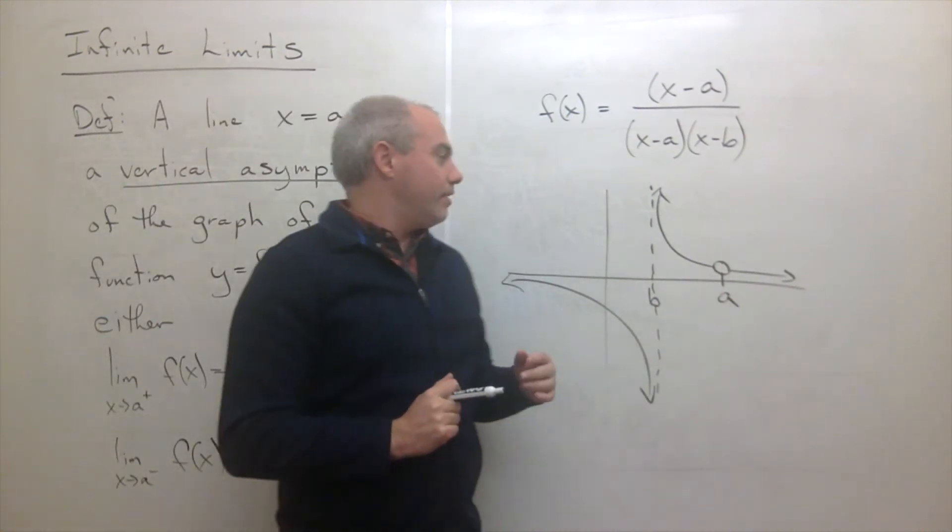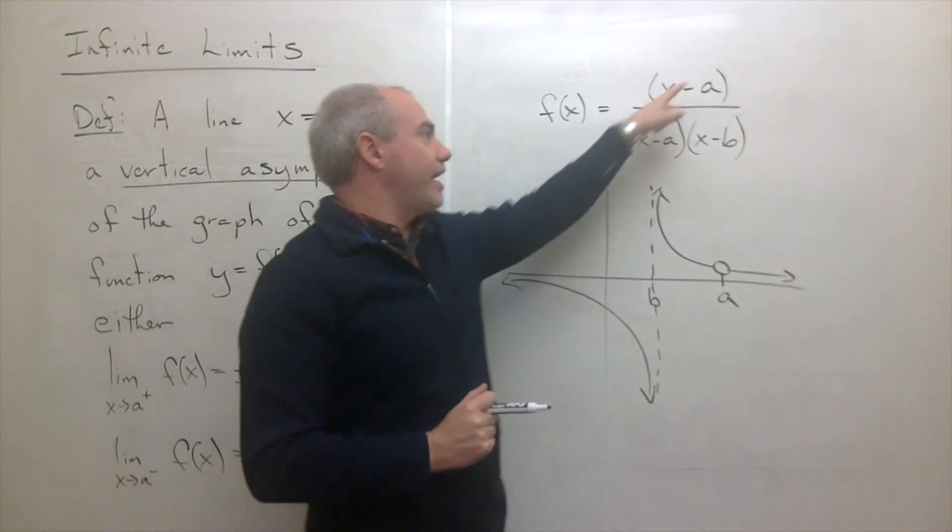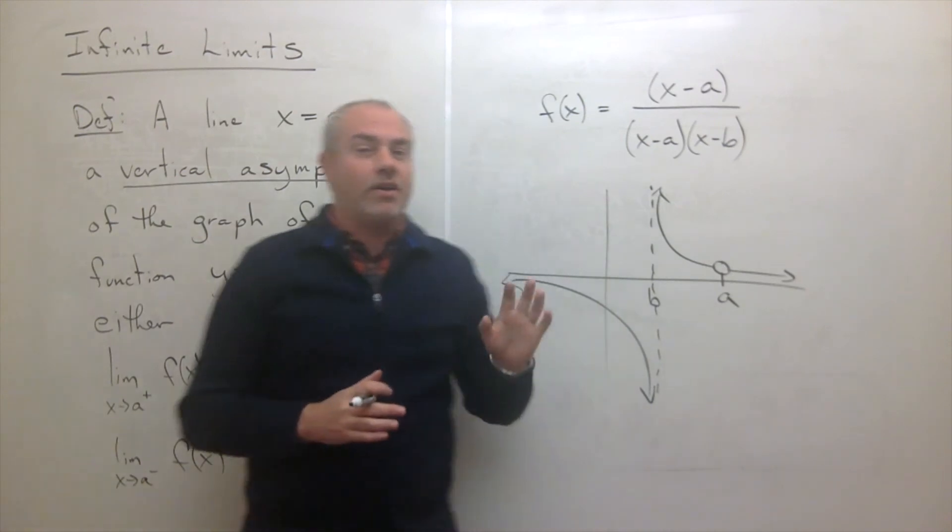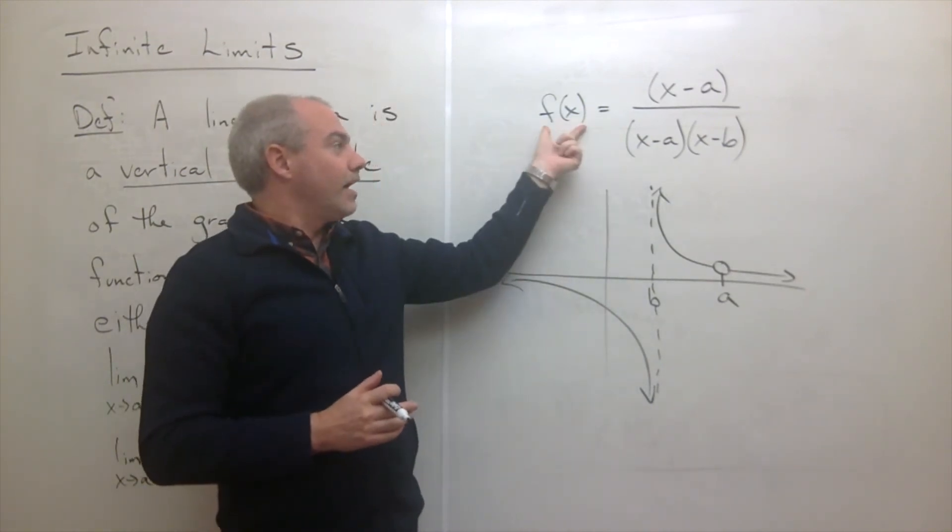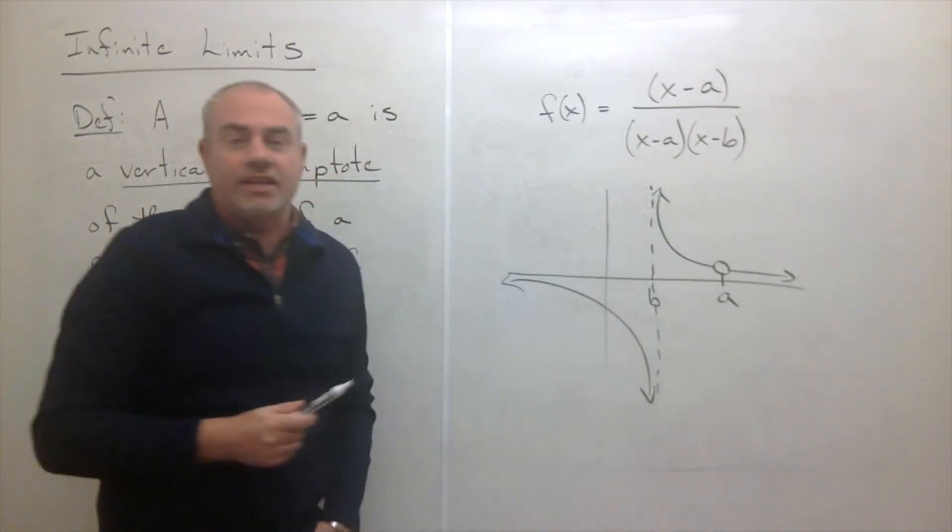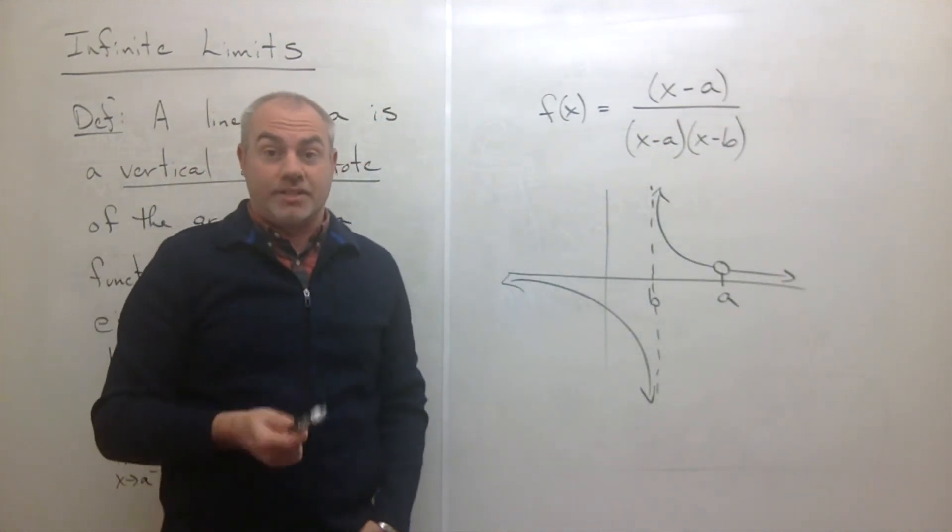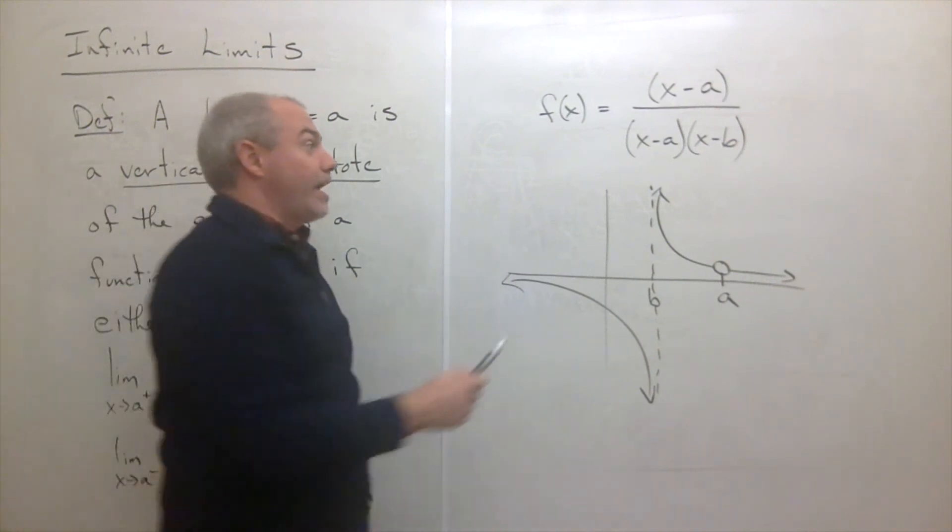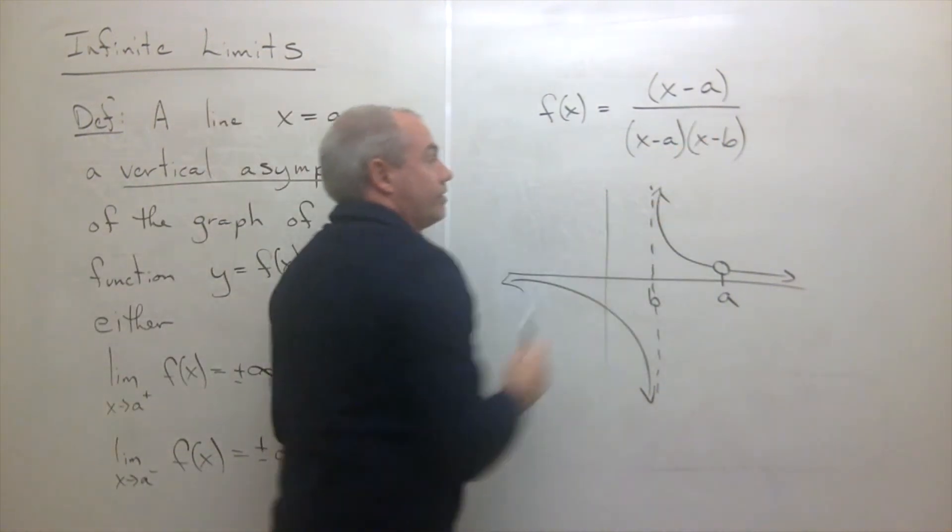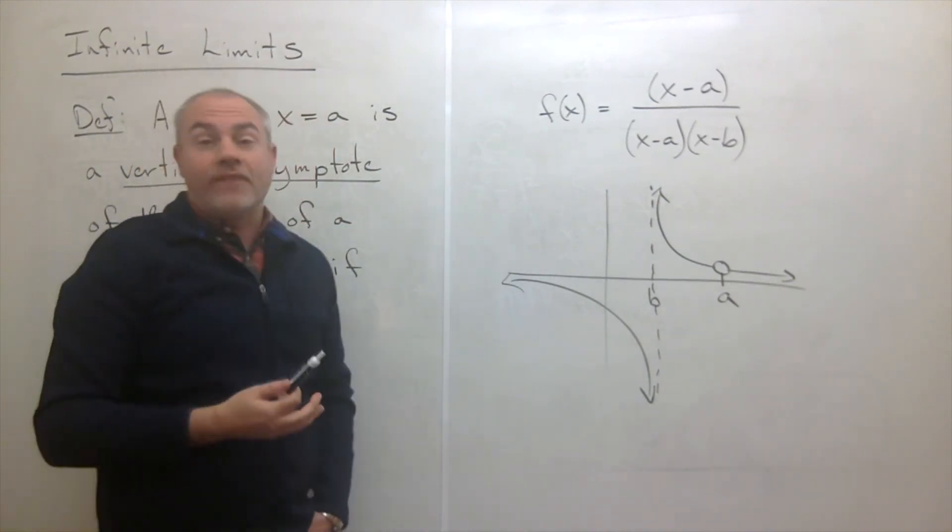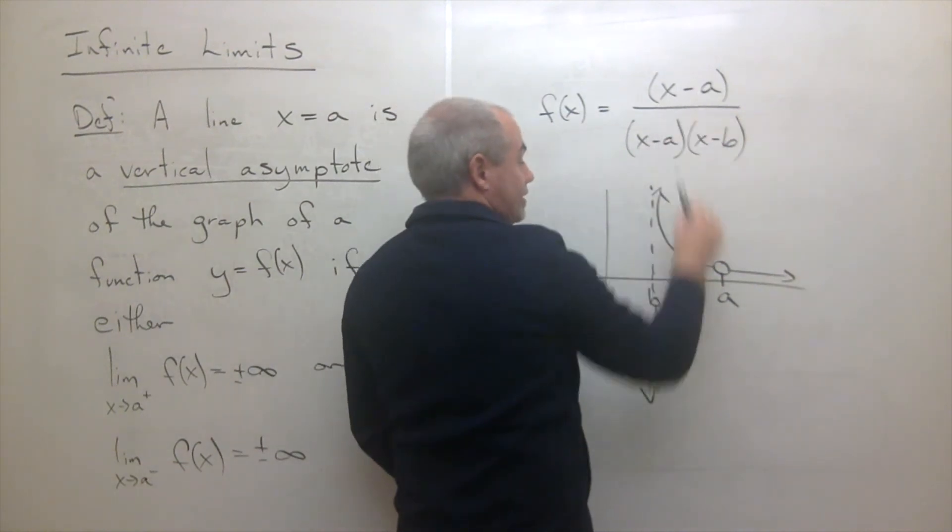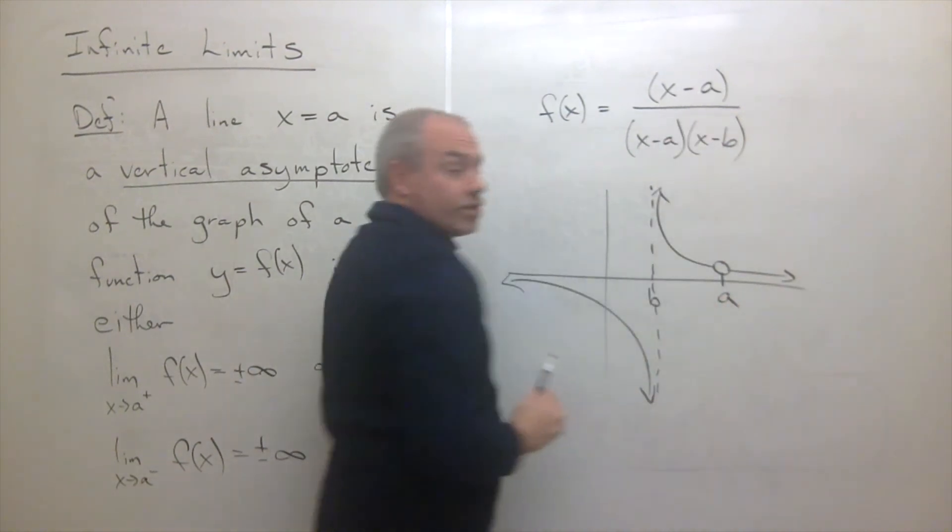If I cancel the x minus a's, what that's really doing, remember, I said it's not quite the same. I can't just go around crossing things out unless I know that x is not equal to a in this case. If x is not equal to a, then I could cancel these. But I don't know if x is equal to a or not. What is happening in this case is there's just a hole at a.